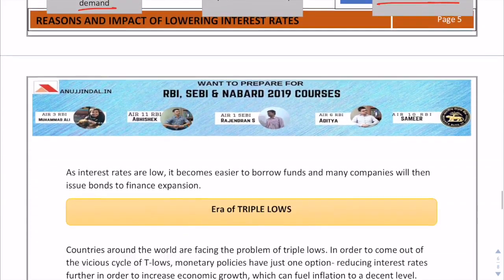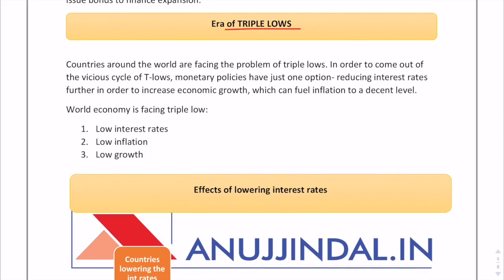The era of triple lows means low inflation rate, low interest rates, and low growth. To come out of this vicious circle, governments are using interest rate reductions. By lowering interest rates, they expect to boost growth. As the interest rate is reduced, the borrowing cost goes down, which increases the demand for loanable funds, and hence enhances growth and economic activity.